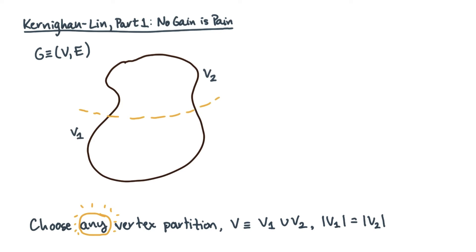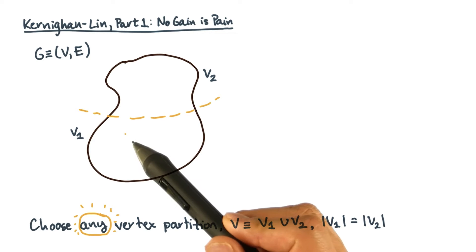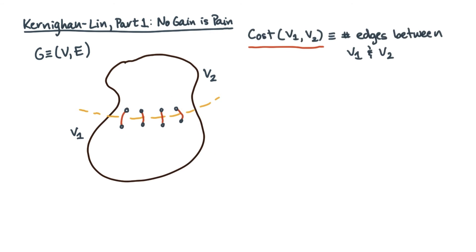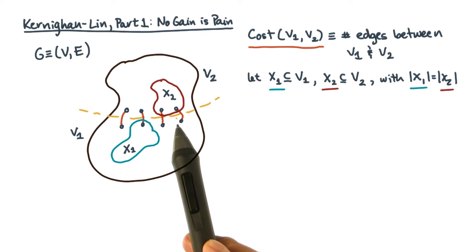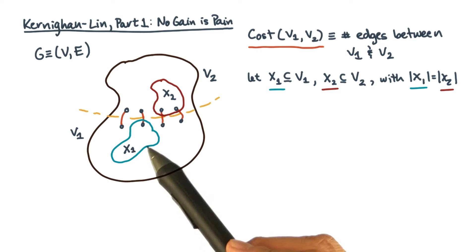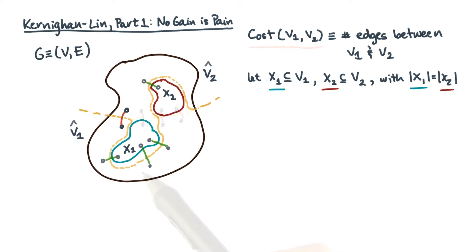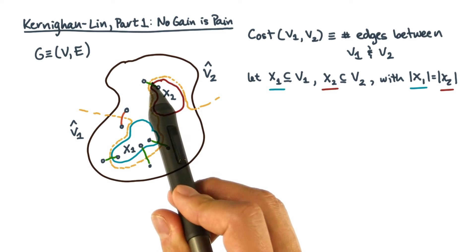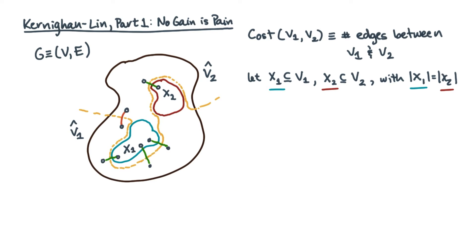Let's define the cost of this partitioning to be the number of edges that go between V1 and V2. Now, imagine that a magic bean hands you two equal size subsets of V1 and V2. Let's call these subsets X1 and X2. Imagine that you were to swap these two subsets. Naturally, you'd expect the cut size to change, but by how much? To answer this question in a formal way, let's start with some definitions.